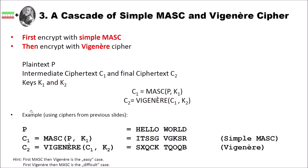Here is an example using our previous ciphers. Our plaintext is 'hello world'. We first apply MASC as seen before and get the intermediate ciphertext ITSSG VGKSR. Then on this intermediate ciphertext, we apply the Vigenère cipher using key K2 — in our example, the keyword is 'key' — and get our final ciphertext SXQCKTQOQB. An important hint: first using MASC and then the Vigenère cipher is the easy case, while first using Vigenère and then MASC is the difficult case — and we will see why later.